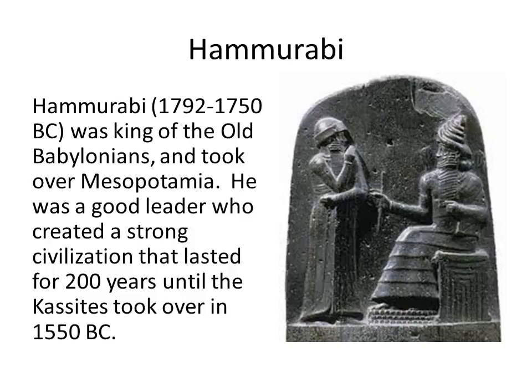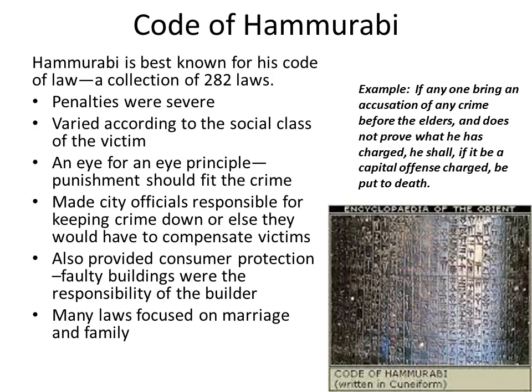The next person we're going to talk about is Hammurabi. He lived about 1792 to 1750 BCE. He was the king of the old Babylonians and took over Mesopotamia. He was a good leader who created a strong civilization that lasted for 200 years until the Kassites took over in 1550 BCE. But why is Hammurabi so important? It's because he developed a code — the Code of Hammurabi — written in cuneiform. It is a collection of 282 laws.